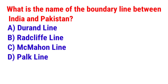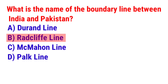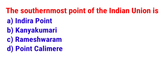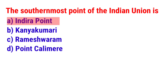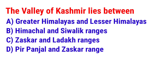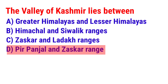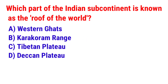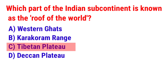Question 7: What is the name of the boundary line between India and Pakistan? The answer is option B — Radcliffe Line. Question 8: The southernmost point of the Indian Union is? The answer is option A — Indira Point. Question 9: The valley of Kashmir lies between? The answer is option D — Pir Panjal and Zanskar Range. Question 10: Which part of the Indian subcontinent is known as the Roof of the World? The answer is option C — Tibetan Plateau.